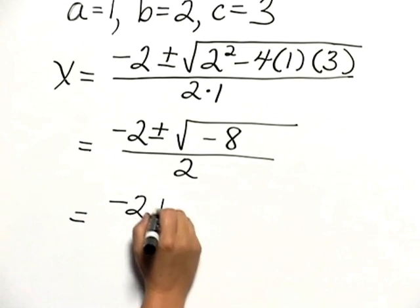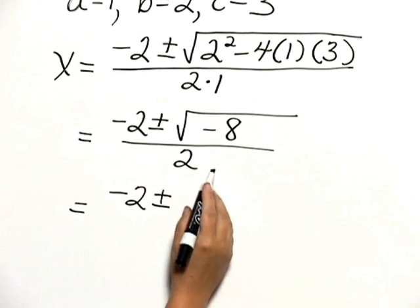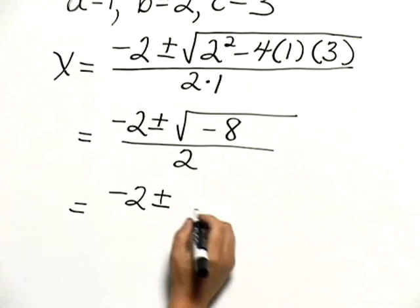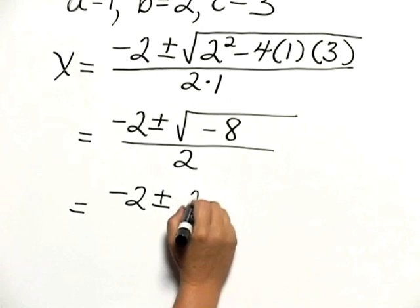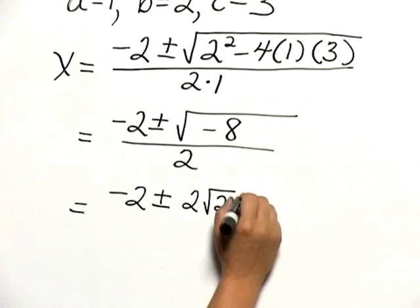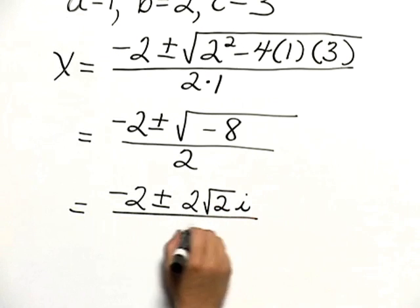We can simplify this a little further. This gives us negative 2 plus or minus the square root of 8 is 2 times the square root of 2. So that would be 2 times the square root of 2i, and all of that is over 2.